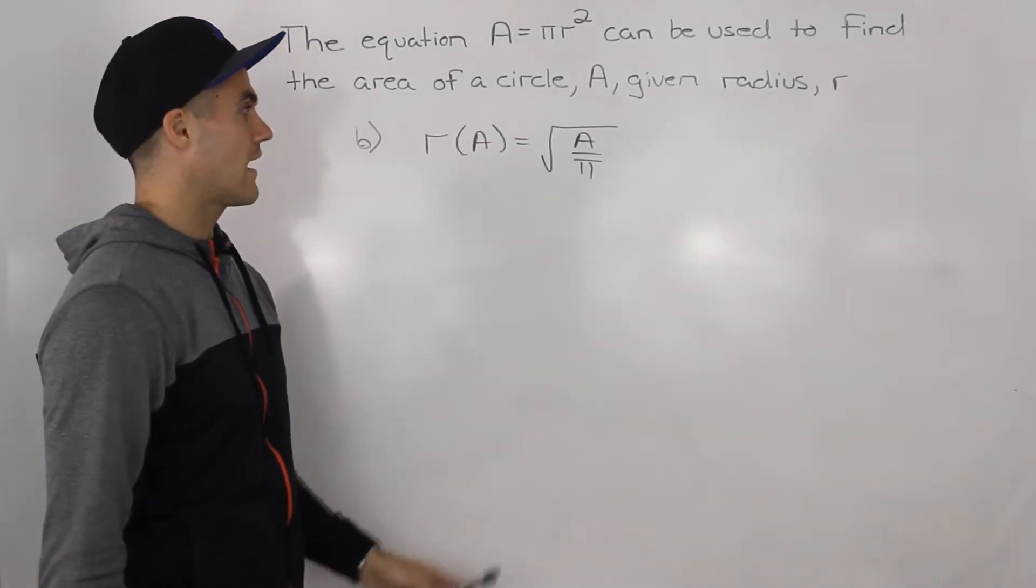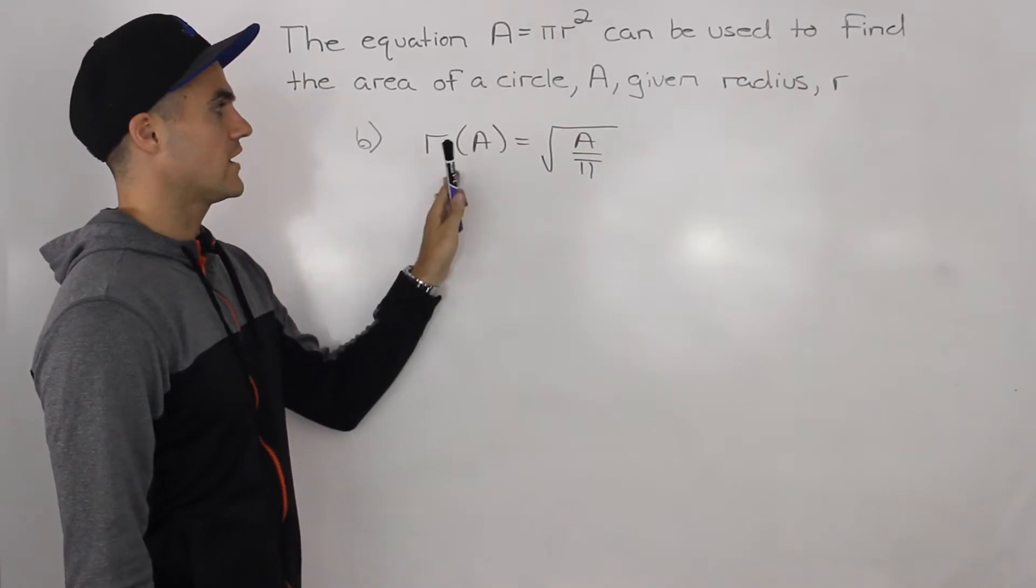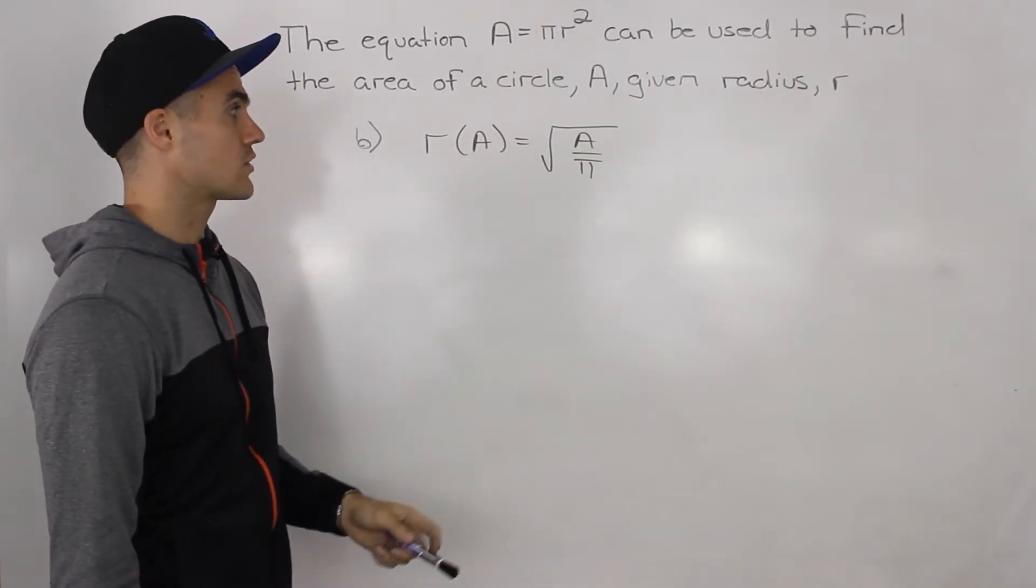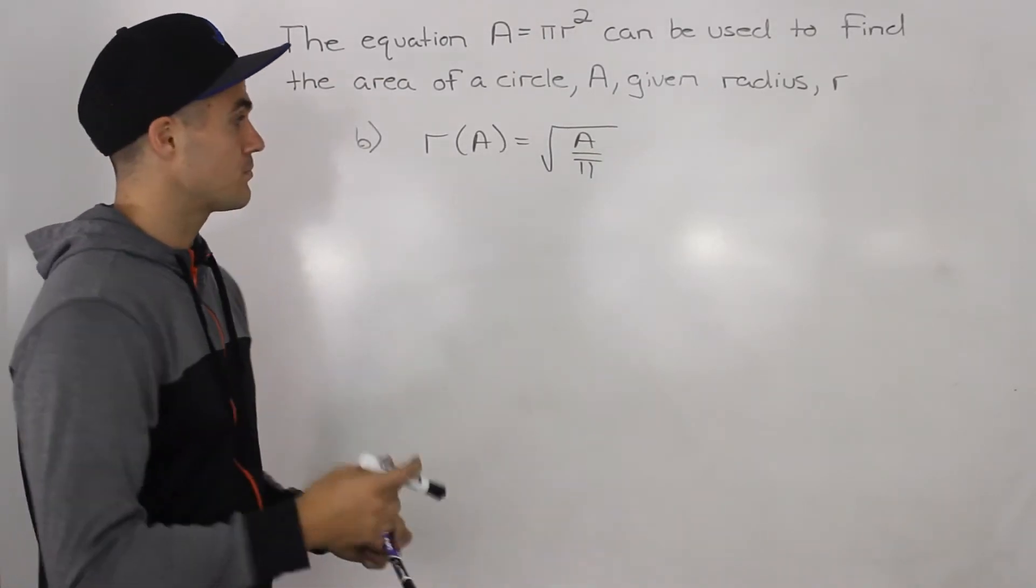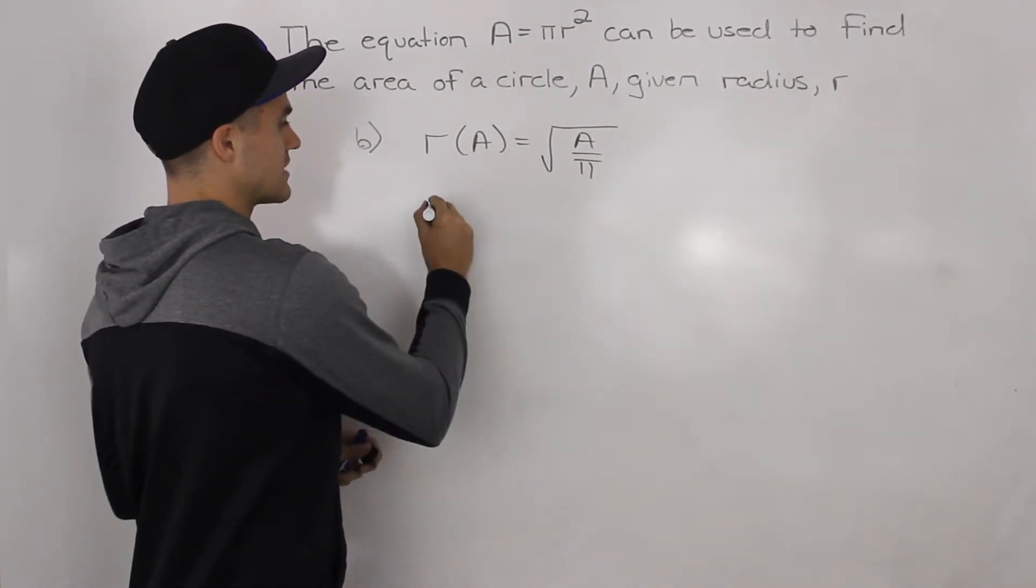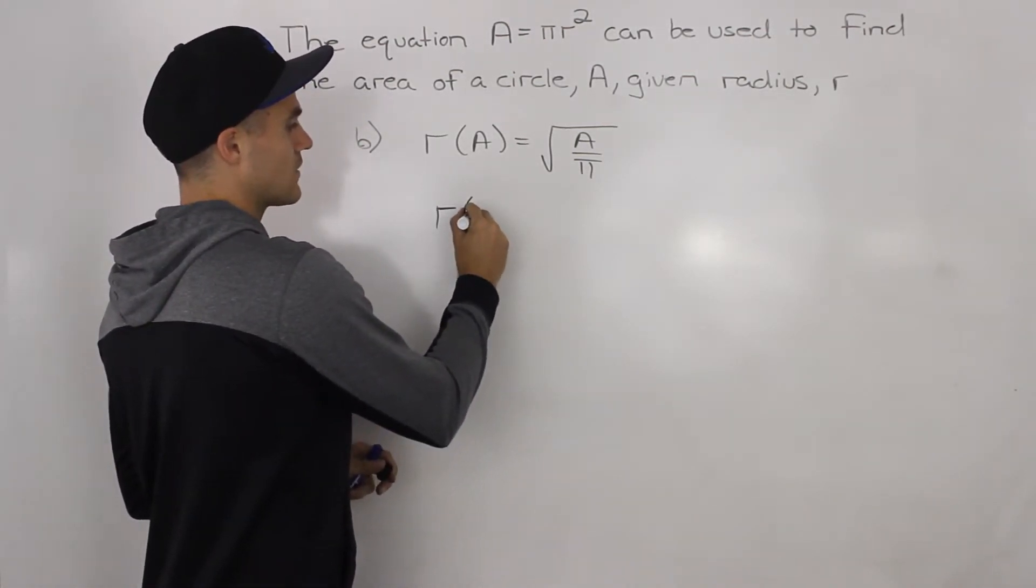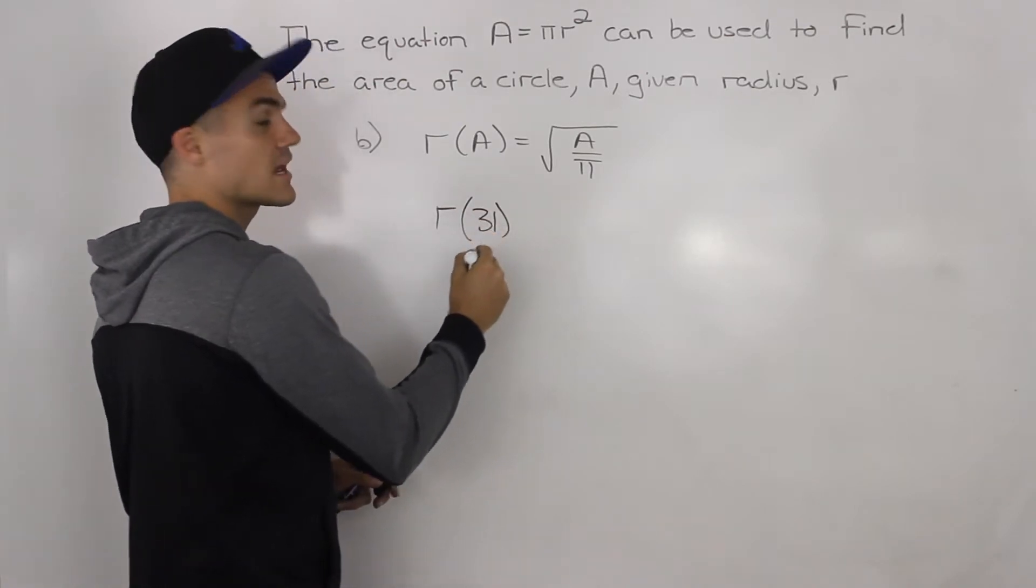So now that we have that equation of the radius given the area of a circle, we can find part b now. Part b is asking us what's the radius of a circle that has an area of 31 centimeters squared.